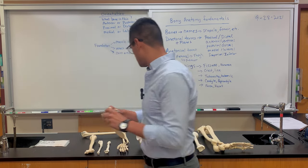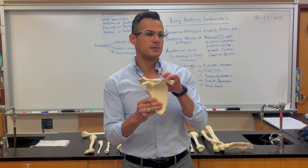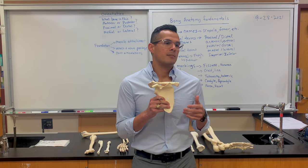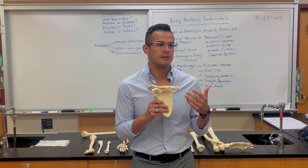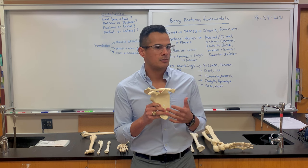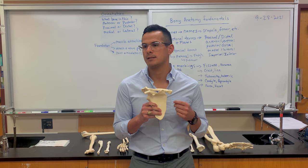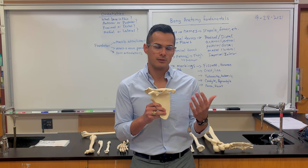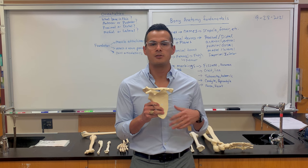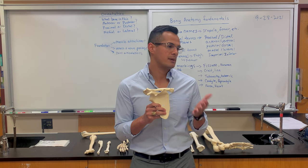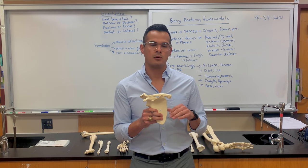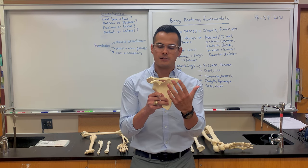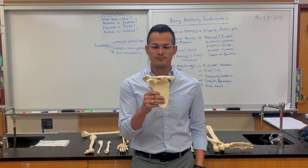The first bone we're going to start off with is the scapula. Whenever you're identifying bones and their landmarks, you want to first identify the bone and make sure you understand what you're looking at — whether you're looking at it from an anterior view, that's the front, or a posterior view. You also want to establish what part is medial versus lateral, or proximal versus distal. What you're looking at here is an anterior view of the scapula.